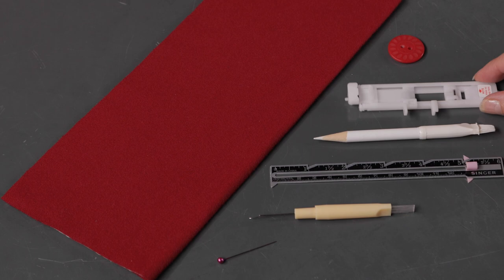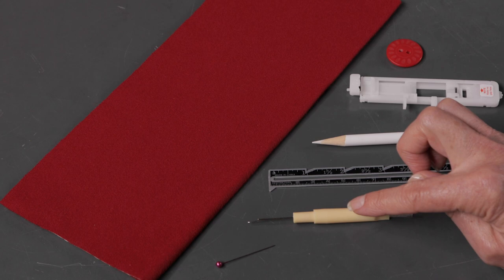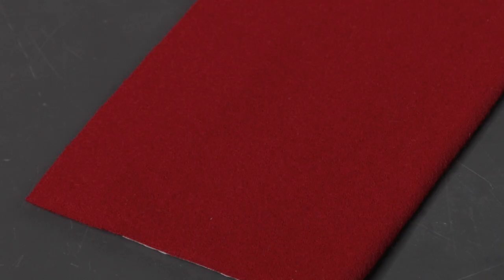To sew a buttonhole what you're going to need is your button of course and the buttonhole foot from your machine. You're going to need a fabric marking pen or pencil, a small ruler, and from your machine's accessories you need your seam ripper and a straight pin.